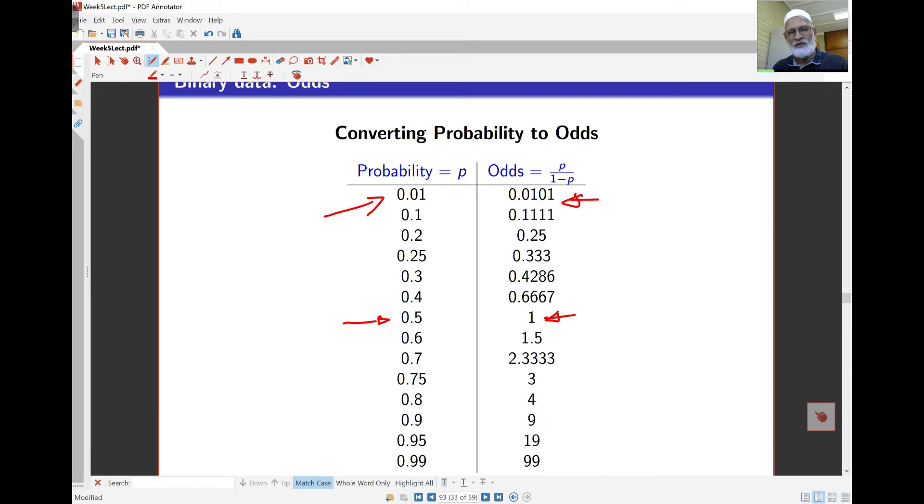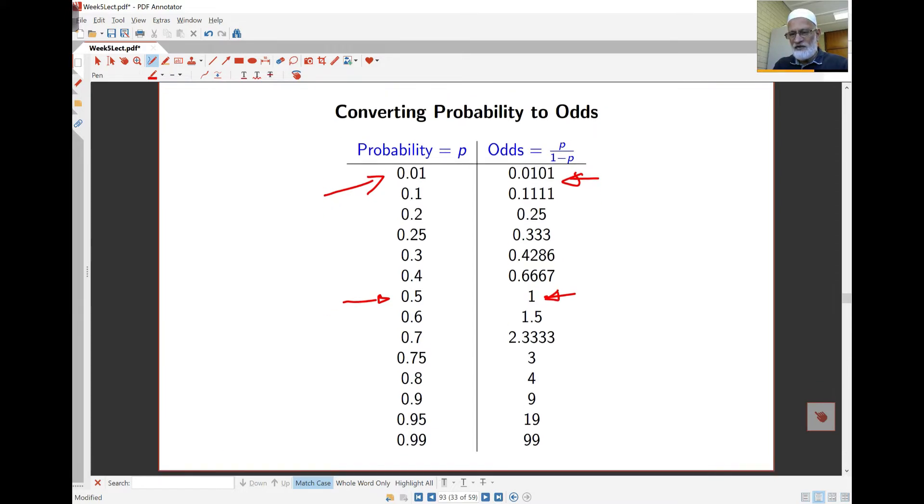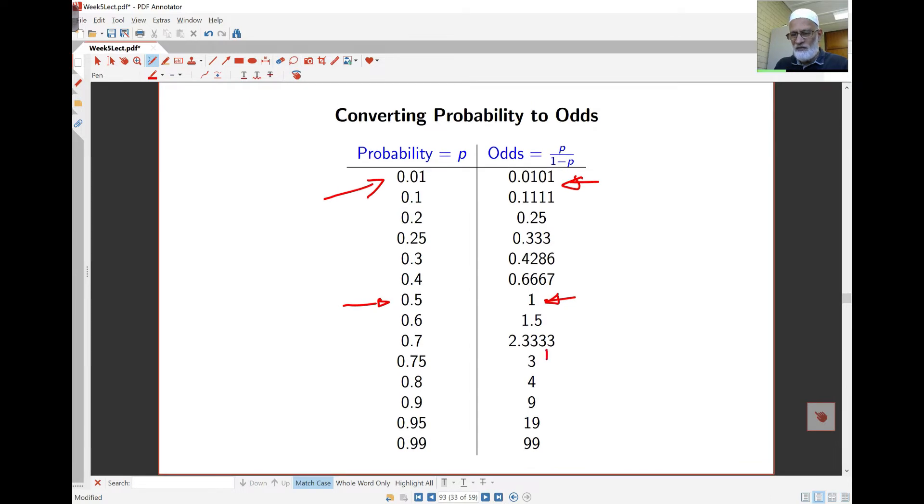As probability of success increases, the odds becomes bigger and bigger. This is 0.99, that's 99 there. Of course, if you go a bit higher than that for the odds here, you will get a larger number. If you make the odds equal to 1, then I'm dividing here by 0, which is going to be a very large number indeed, it goes towards infinity.